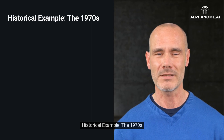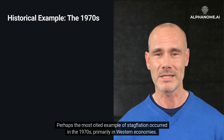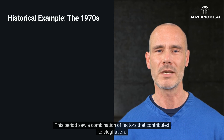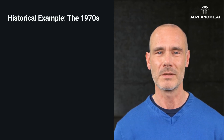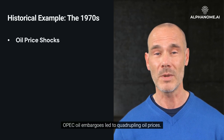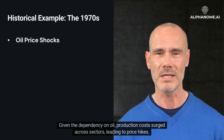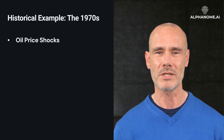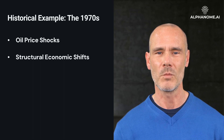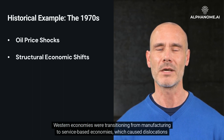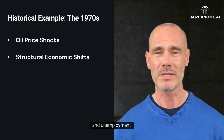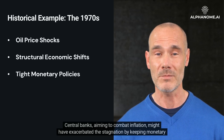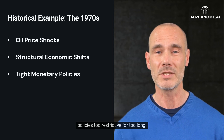Historical example: the 1970s. Perhaps the most cited example of stagflation occurred in the 1970s, primarily in Western economies. Key contributing factors included oil price shocks — OPEC oil embargoes led to quadrupling oil prices, causing production costs to surge across sectors; structural economic shifts as Western economies transitioned from manufacturing to service-based economies, causing dislocations and unemployment; and tight monetary policies, where central banks aiming to combat inflation may have exacerbated stagnation by keeping policies too restrictive for too long.